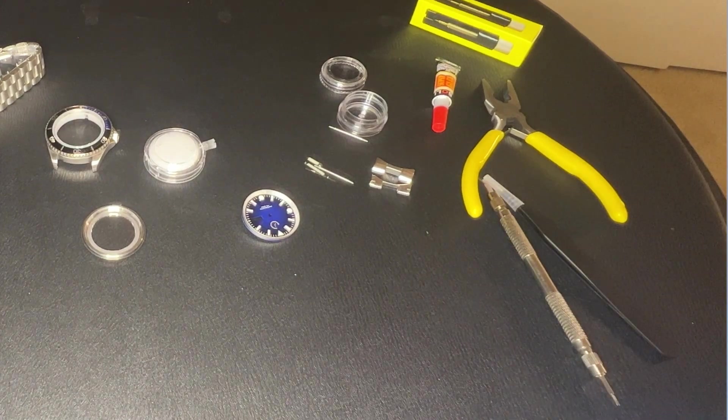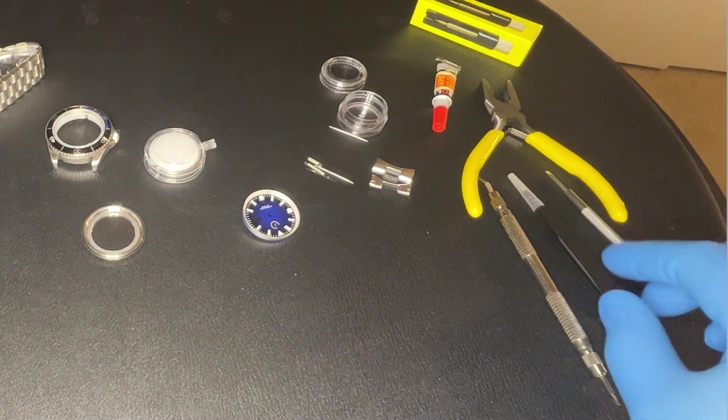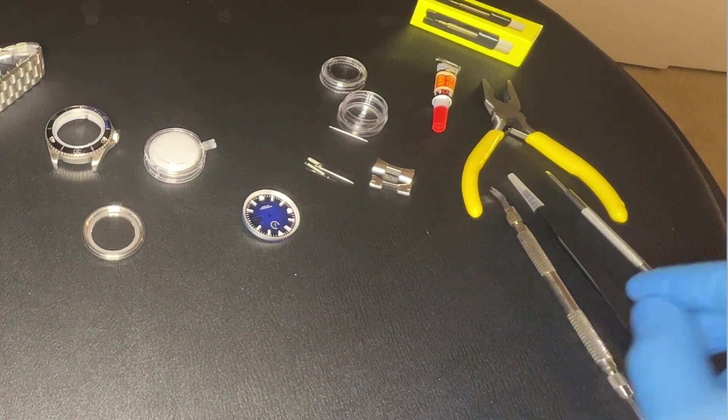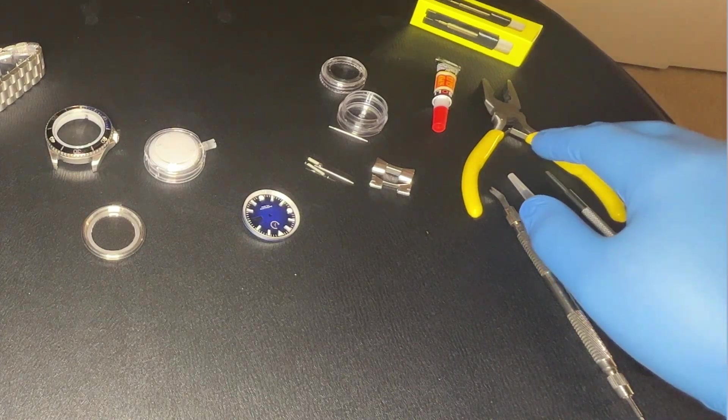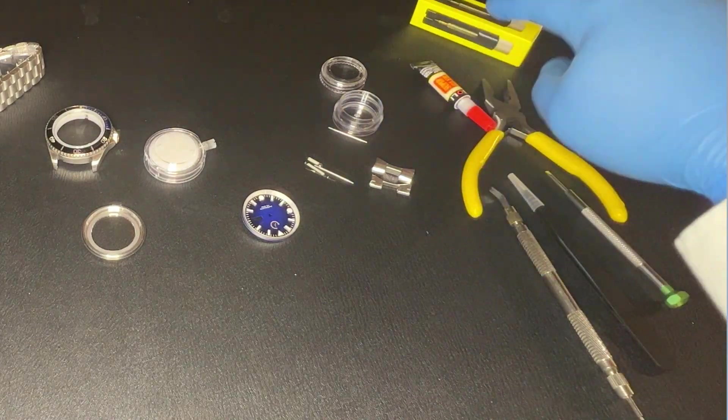These are the tools that were provided. We have a screwdriver, tweezers, we have a spring bar, pliers, super glue for some reason, watch link remover kit, and the gloves.